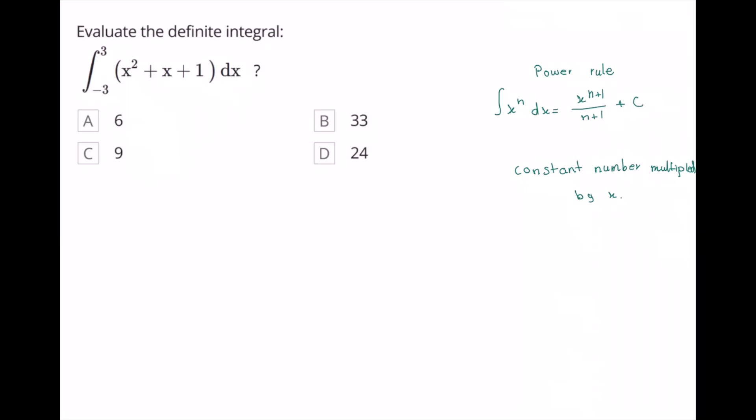First we will use the power rule: 2 plus 1 equals 3, so we would have here x to the power of 3 over the new power 3, plus x to the power of 1 plus 1 equals 2, plus x to the power of 2 over the new power which is 2. And since we have 1 as a constant number, we would have to multiply it by x.